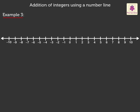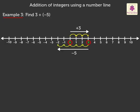Example 3: Find 3 plus negative 5. Firstly, start from 0 and move 3 places to the right. We reached positive 3. Now, we move 5 places to the left, i.e., in the negative direction from positive 3, and reach negative 2. Therefore, 3 plus negative 5 is equal to negative 2.